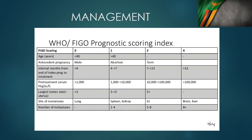This is the World Health Organization and FIGO prognostic scoring for gestational trophoblastic neoplasia. There are eight parameters to remember, and I've rearranged them for exam and clinical purposes. You need to think about this scoring when taking a history from a GTN patient — it helps you gather all the information, decide on the prognostic score, plan their care, and counsel the patient.